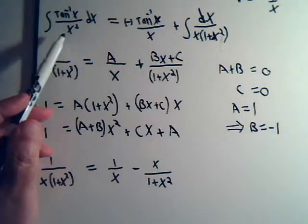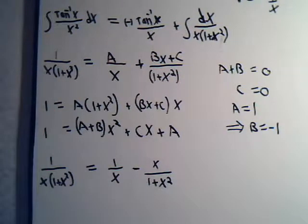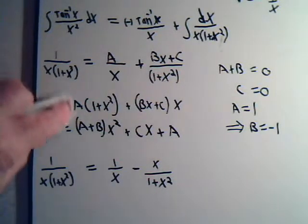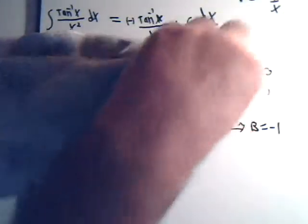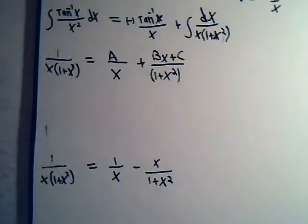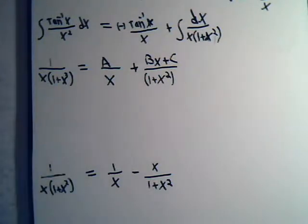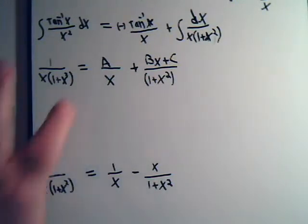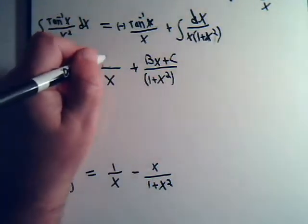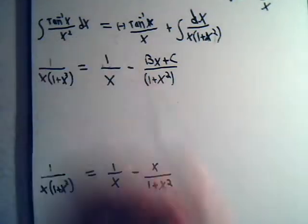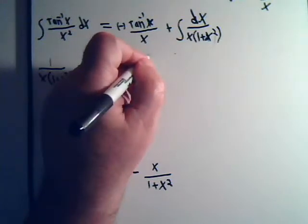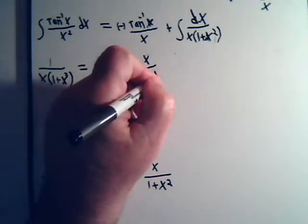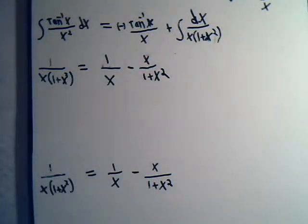Our original integral was this. This here now becomes 1 over x minus x divided by 1 plus x squared. So it looks like this is going to set us up pretty well.